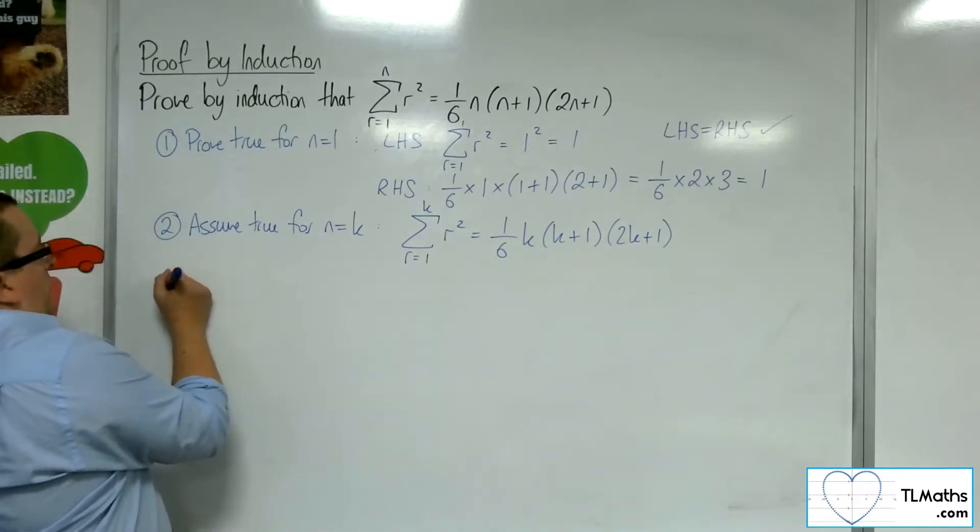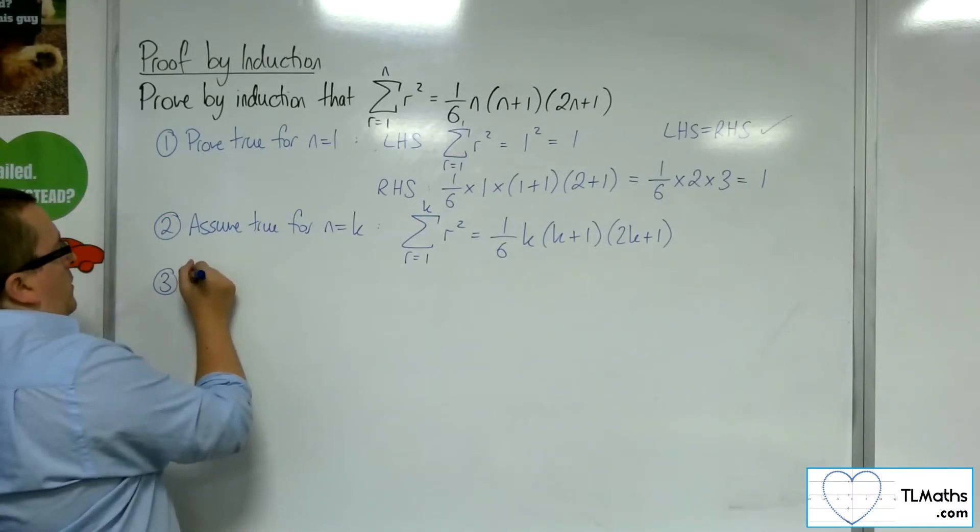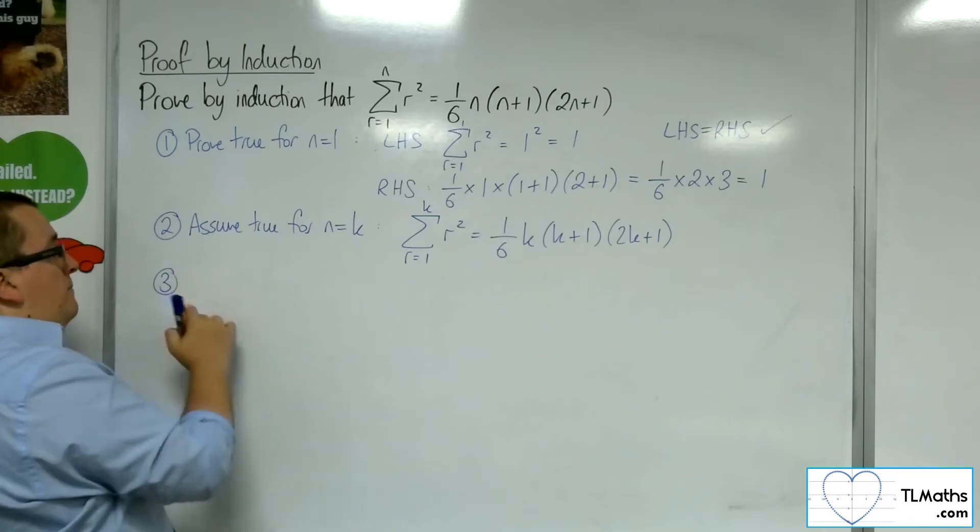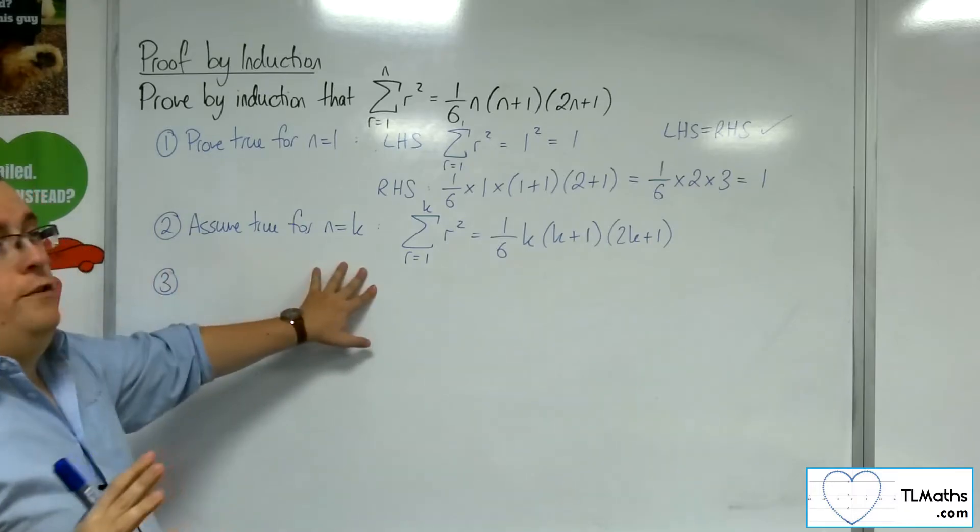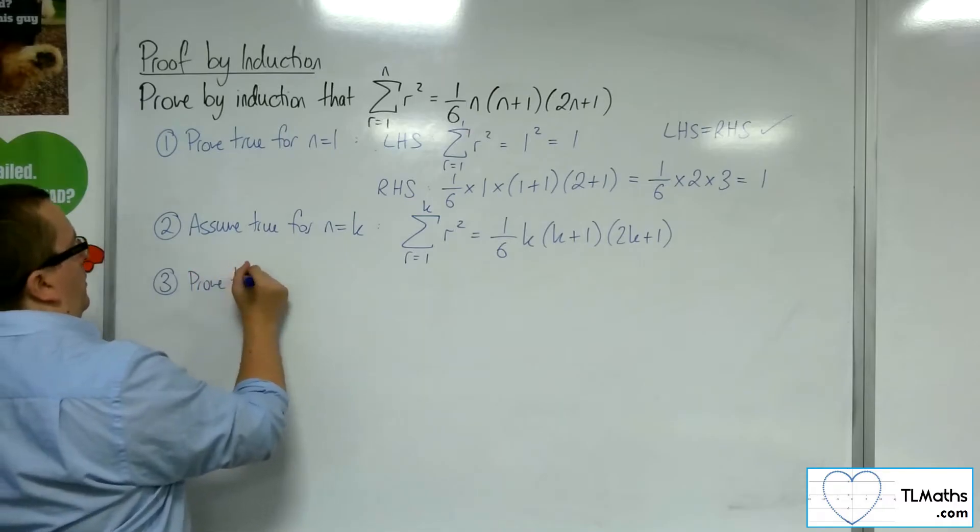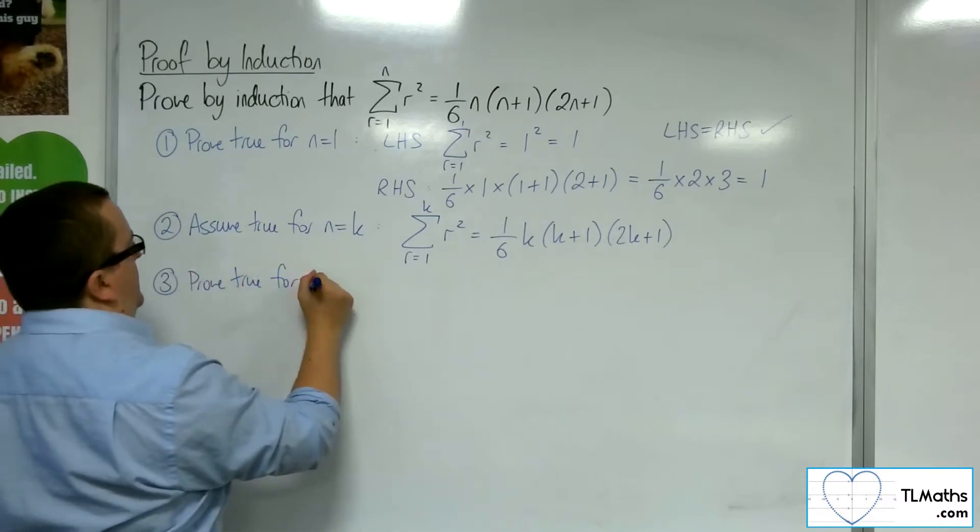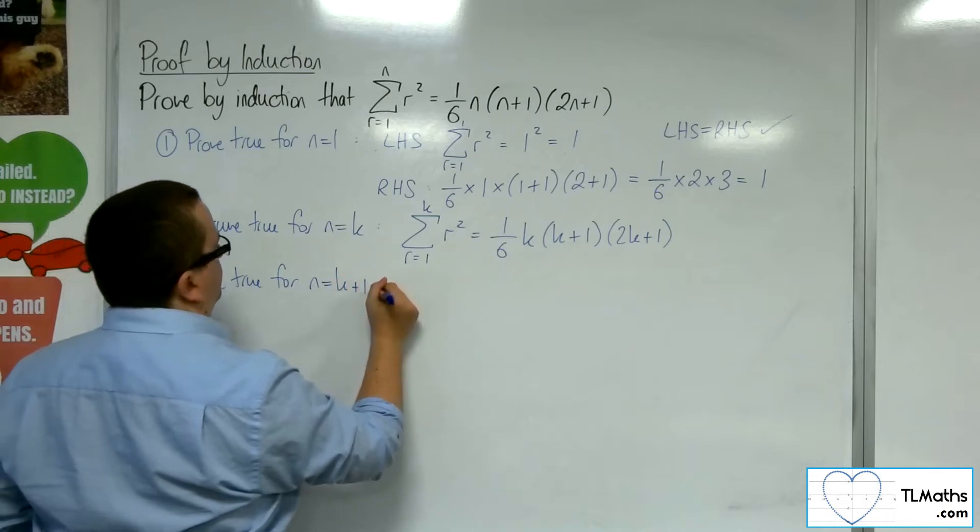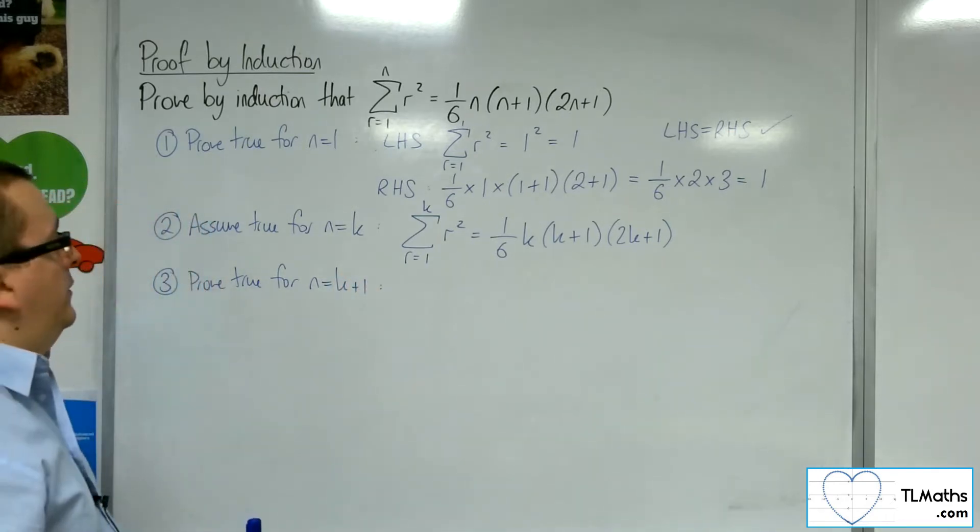Step 3. Assuming true for n equals k, prove true for n equals k plus 1. This is what we want to do next.